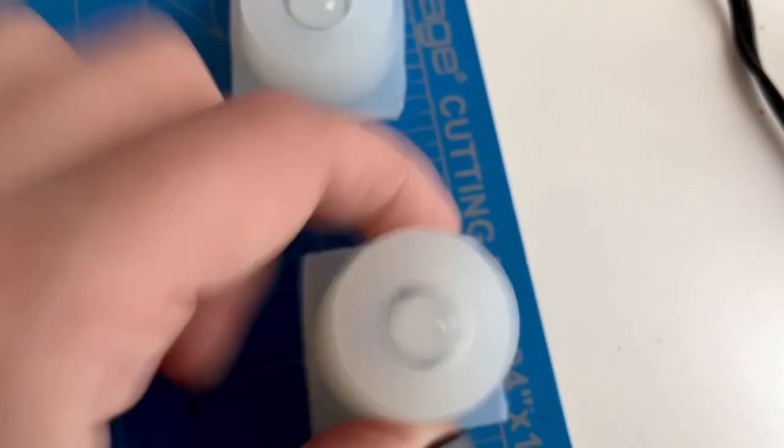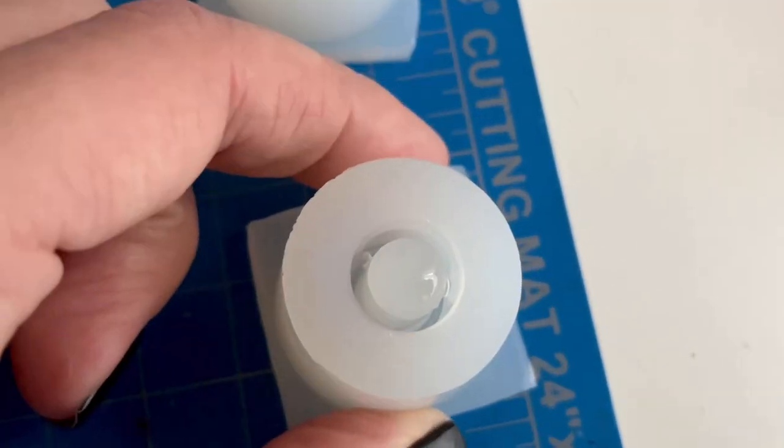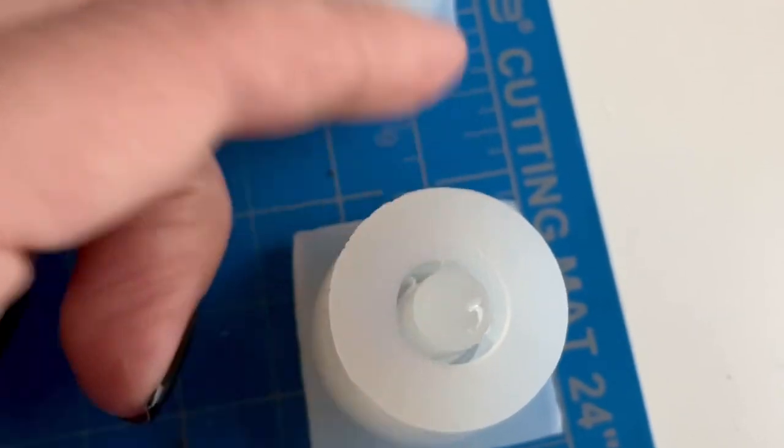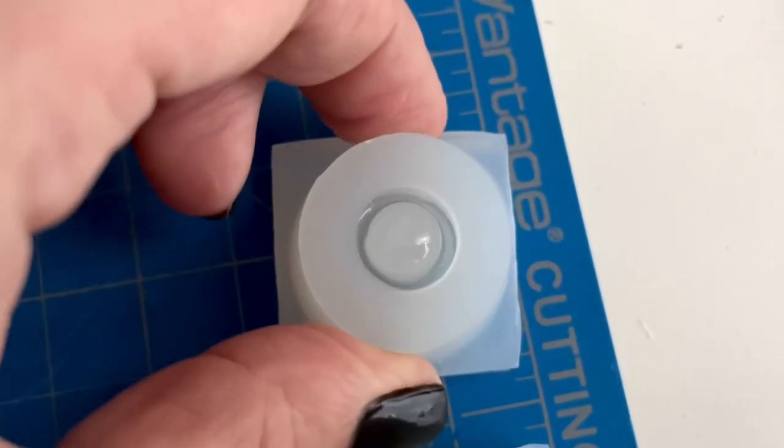If you find that some air bubbles have formed just continue tapping the mold against a hard surface to try to remove some of the air bubbles. You can also let the mold sit for a while until the air bubbles come up to the top.